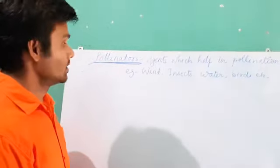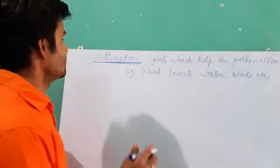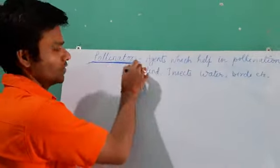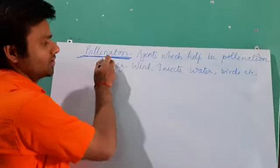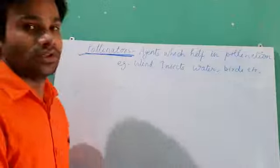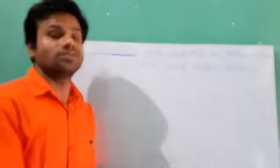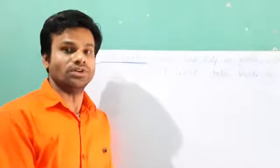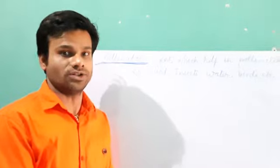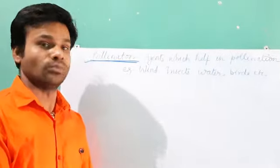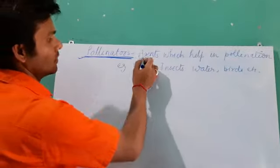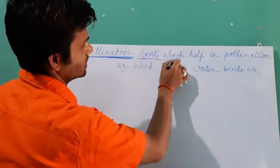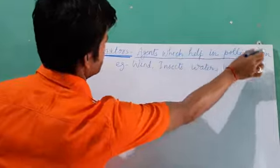Good morning all of you. Today our topic is pollinators. What are pollinators? The agents which help in pollination in flowering plants are called pollinators — agents which help in pollination.